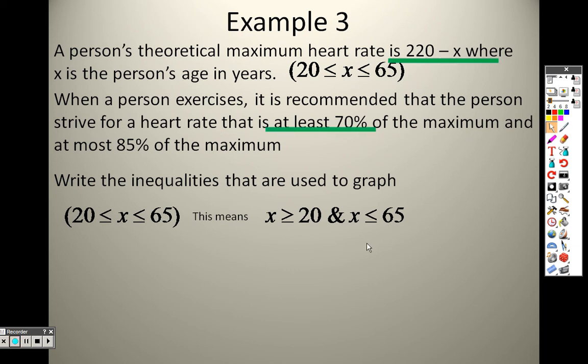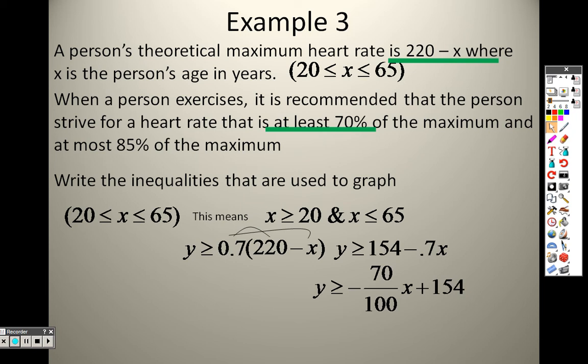At least 70% means y has to be greater than or equal to 70%. The minimum is 70, that's why it's greater than or equal to 0.7 of 220 minus x, because that's what your heart rate is. When I distribute that through, I end up with y is greater than or equal to 154 minus 0.7x. If I wanted to write that as a fraction using the y-intercept form, this would be negative 70 over 100 x plus 154.